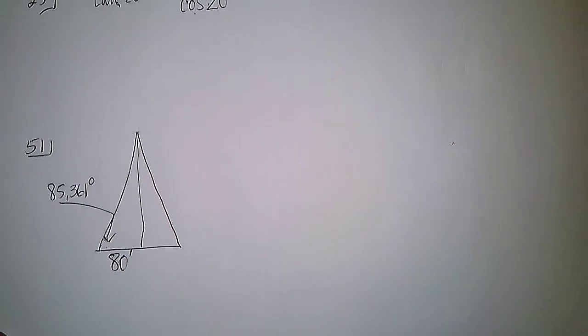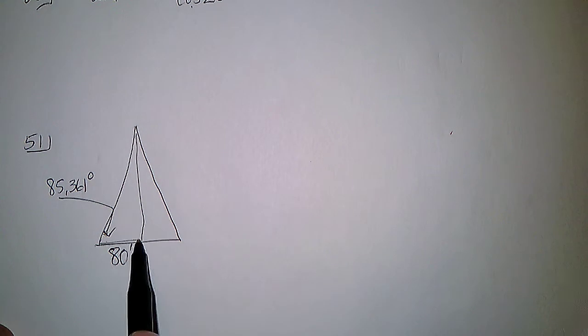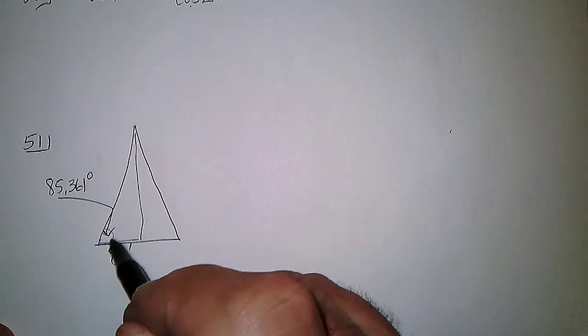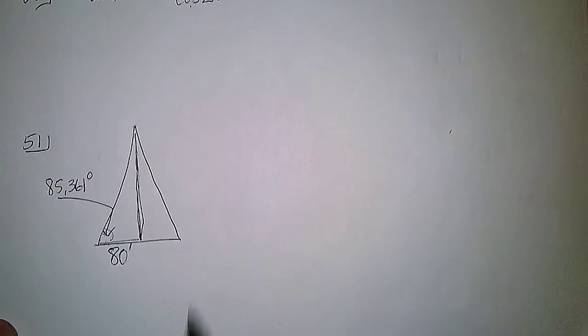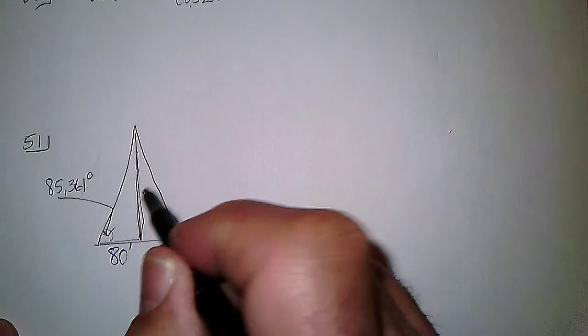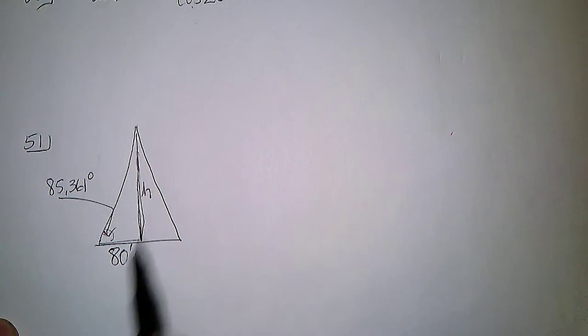And then they had 51, the Eiffel Tower, 80 foot over, and this angle in here, and they wanted to know how tall it was. Well, that's the opposite side, the height they want. This is relative to this angle. This is the adjacent, opposite and adjacent, and that's the tangent ratio.